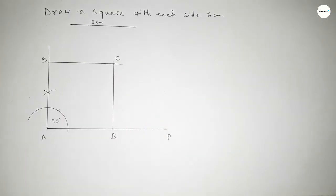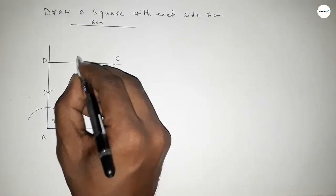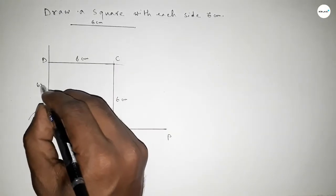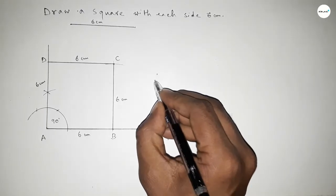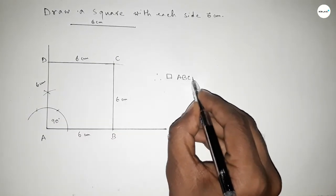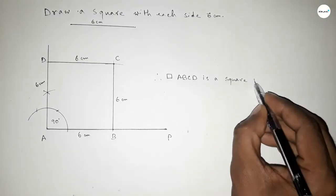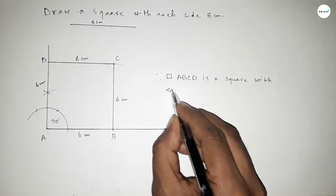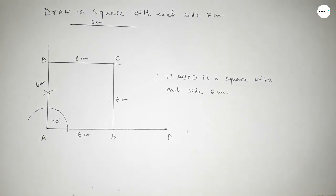This is point D. This side is 6 centimeters, this side is 6 centimeters, this side is 6 centimeters, and this side also 6 centimeters. Therefore rectangle ABCD is a square with each side 6 centimeters. This is the process to construct a square with each side 6 centimeters. That's all — thanks for watching. If this video is helpful, please share it with your friends.